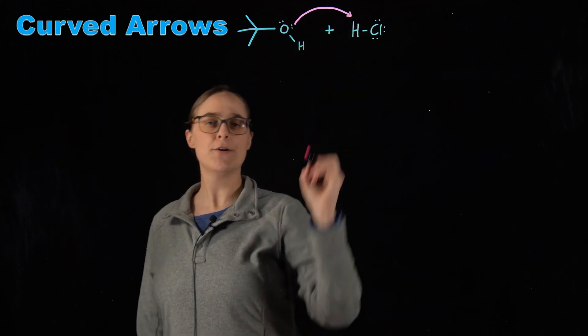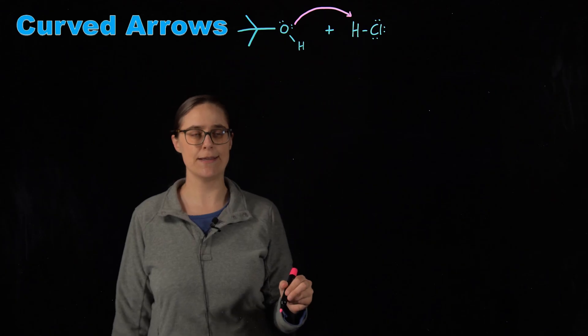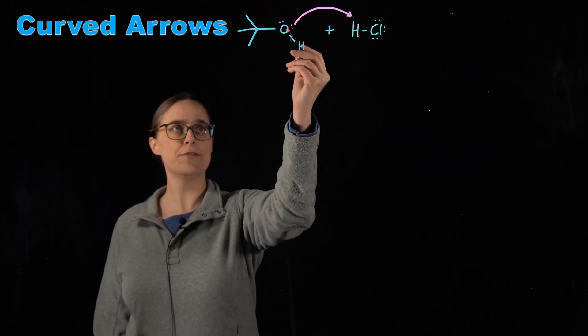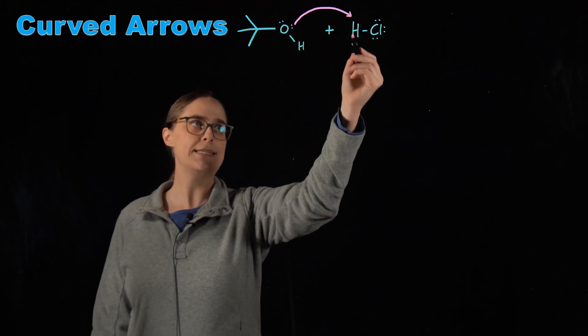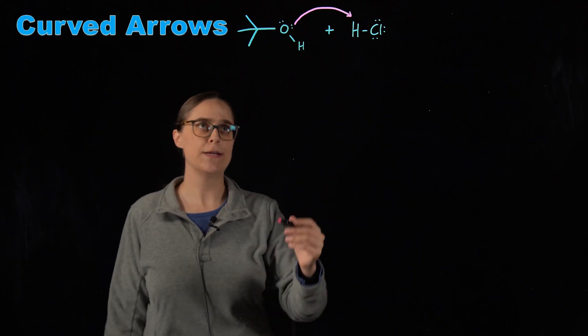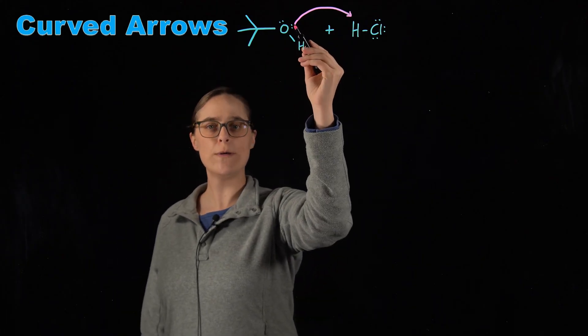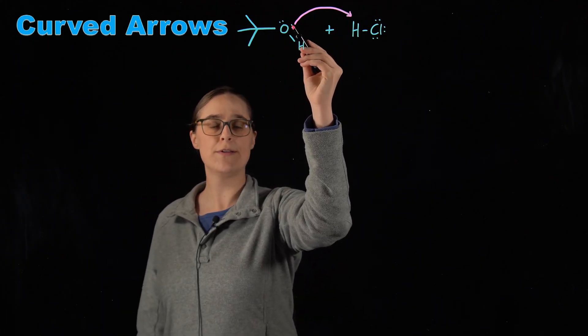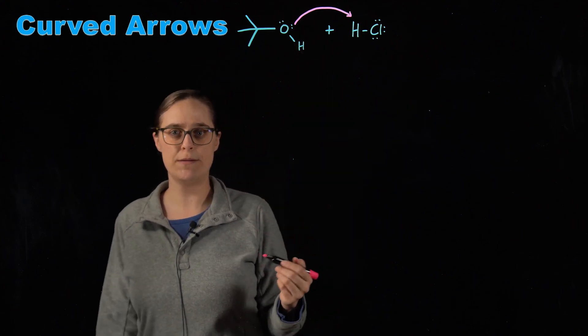A curved arrow shows electrons attacking. So this is showing electrons from the nucleophile attacking the electrophile. So the tail is always going to be at electrons. So either a lone pair or sometimes multiple bonds, electrons in something that's electron rich.